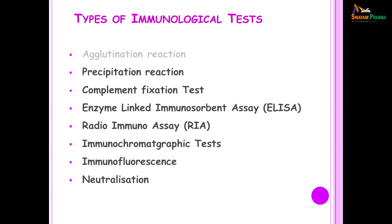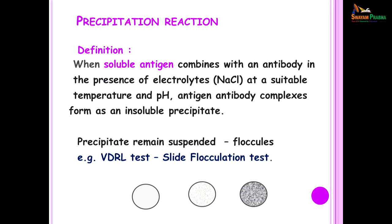We now move on to precipitation reactions. When a soluble antigen combines with an antibody in the presence of electrolytes at a suitable temperature and pH, antigen-antibody complexes form an insoluble precipitate. When these precipitates remain suspended we refer to them as floccules, and the most common test using this principle is the Venereal Disease Research Laboratory test, commonly called the VDRL test, which is used for the diagnosis of syphilis.